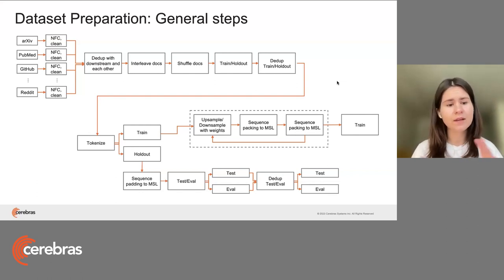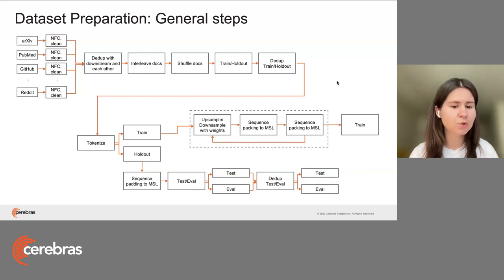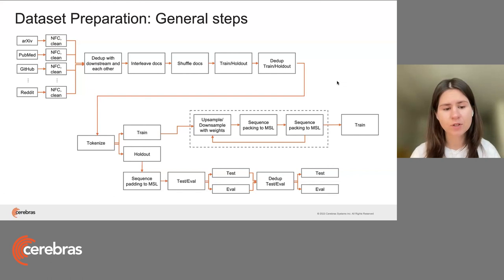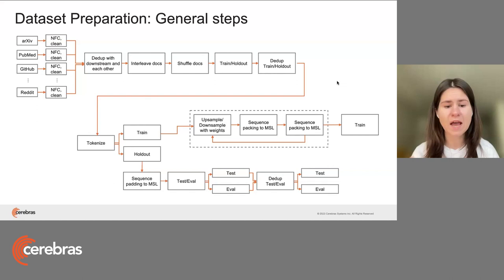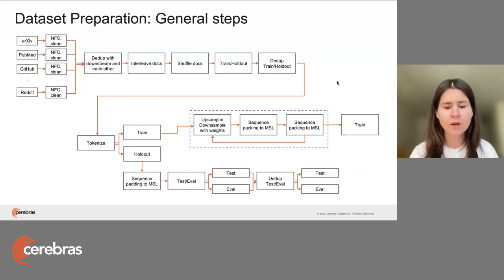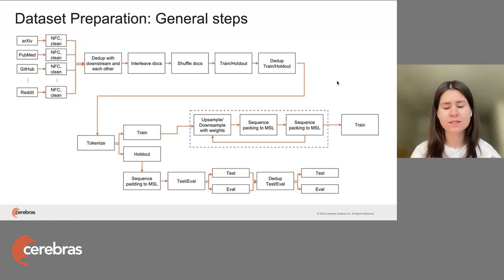The next step is tokenization. Depending on what tokenizer you want to use — your own vocabulary, or GPT-2 tokenizer, GPT-NeoX tokenizer — this stage happens after you de-duplicate the train and holdout. Once you have the two corpora, for the training corpus there are a few more steps before you can actually train on it. For holdout, usually the only thing you need to do is pad the sequences to the specific MSL you have, which can also be done at the model's data loader stage.